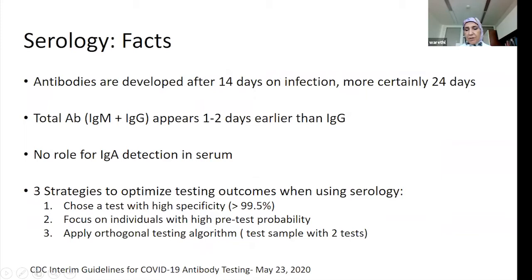Antibodies appear after about two weeks of infection and are reliably detected by three weeks. IgM antibodies appear approximately two days earlier than IgG, so they may provide slightly earlier positivity. There is no role for detecting IgA in serum for this particular disease.